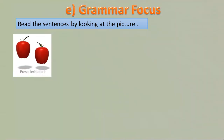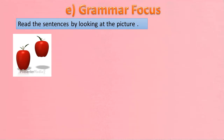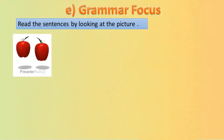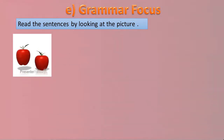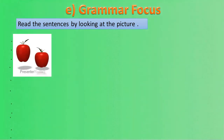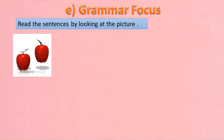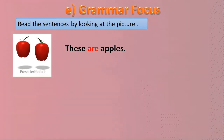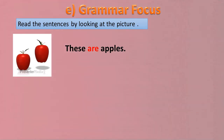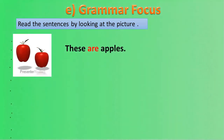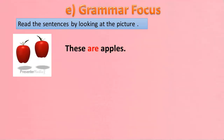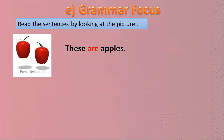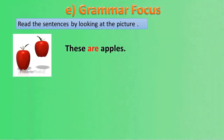Apples — how many apples are these? Two apples. Aur jab ek se zyada cheezon ke bare mein baat karte hain to wahan hum kya use karte hain? Wahan hum 'are' use karte hain. These are apples — kyunke yahan ek se zyada ke bare mein baat ho rahi hai to ye plural ho gaye.